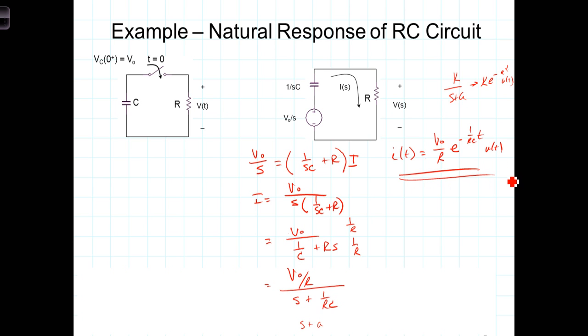So we recognize that from our previous studies as simply the current in this time domain circuit, starting at an initial current of V0 over R at T equals 0. E to the minus 0 is 1, so it starts at V0 over R and dies out exponentially. We can solve for V of T by simply taking I of T and multiplying it by R, which gives us V0 times e to the minus 1 over RC times T.